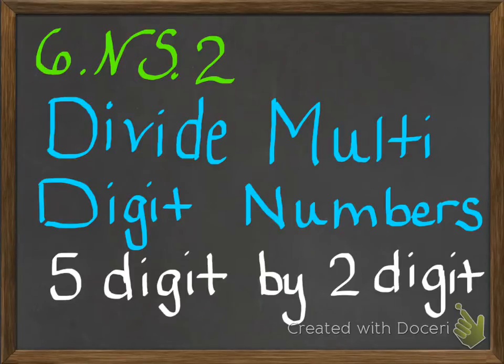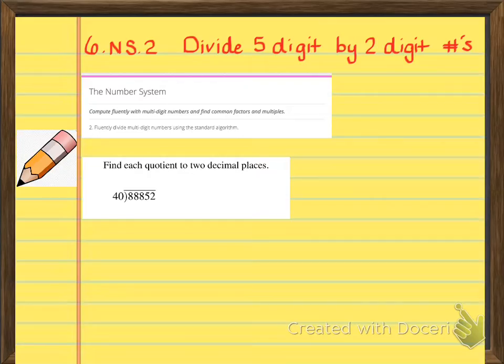The standard is 6.NS.2. Let's take a look at that standard a little more closely. The paper you're looking at should be your next blank paper in your composition notebook, and it should be headed exactly like you see it here. 6.NS.2, divide 5-digit by 2-digit numbers. You also want to write down the standard. It says fluently divide multi-digit numbers using the standard algorithm. Standard algorithm is just another fancy word for process, really. So you can write that down next to it just so you know what that means.